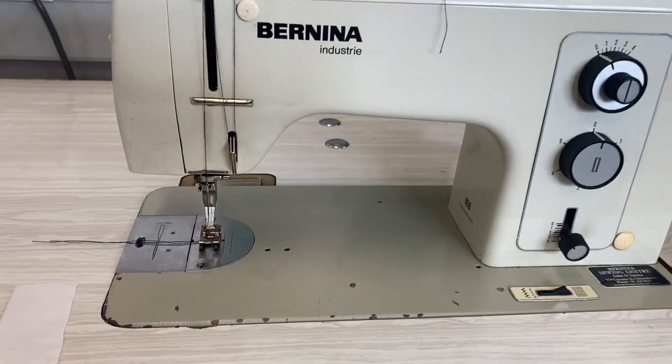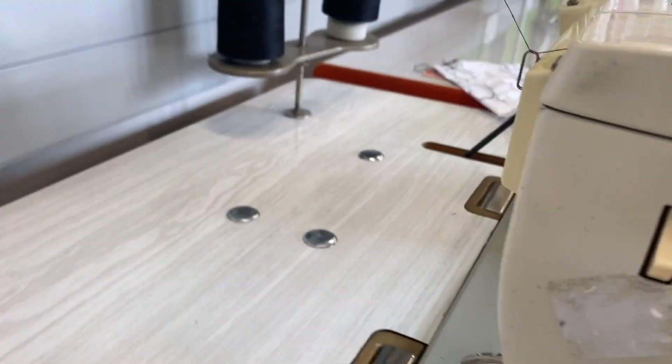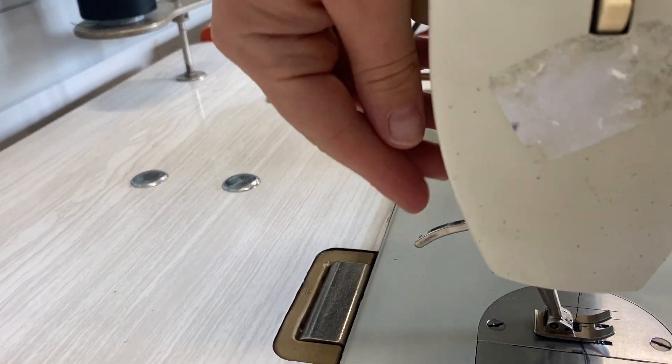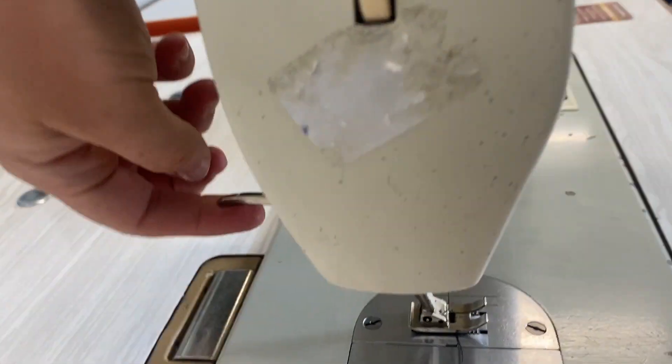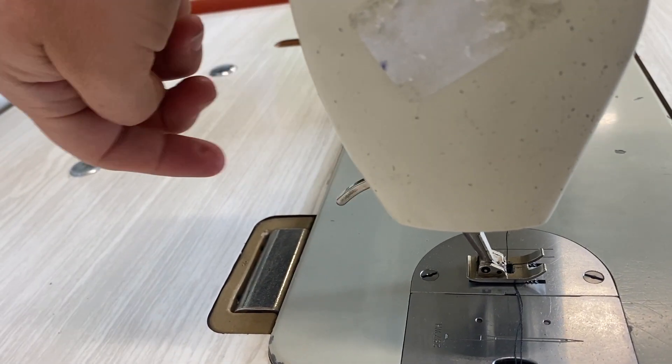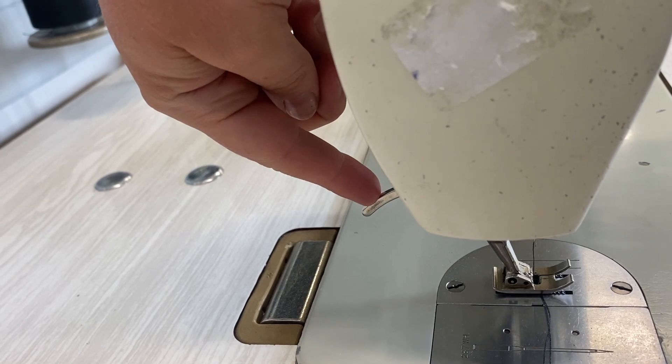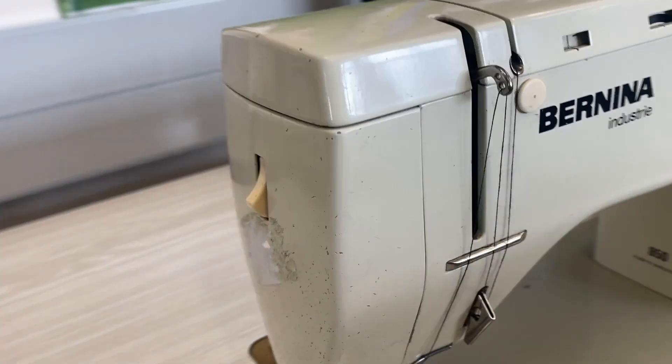On this sewing machine, you've got a manual foot lever at the back, and this one here that lifts the foot. But for industrial sewing machines, you don't want to use the manual lever.